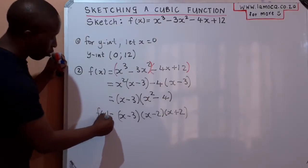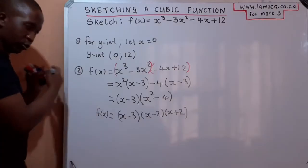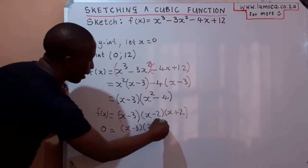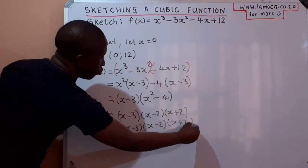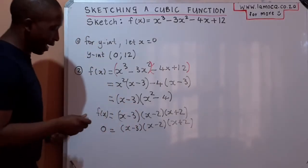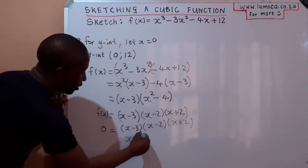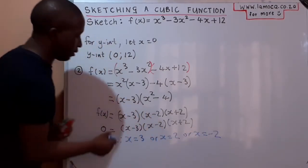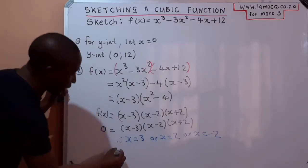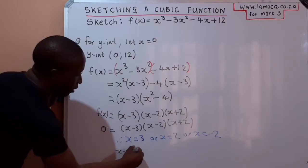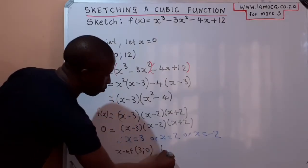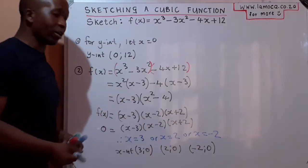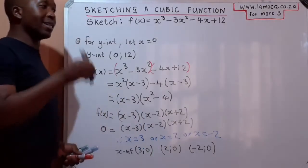For the x-intercepts, we set y equal to zero: 0 = (x − 3)(x − 2)(x + 2). Solving gives x = 3, x = 2, or x = −2. Therefore the x-intercepts in coordinate form are (3, 0), (2, 0), and (−2, 0) — those are the three points where the graph crosses the x-axis.